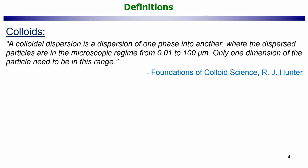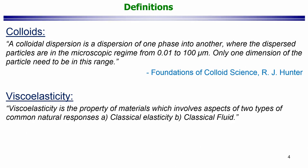This term called colloids we will also encounter in due course. But a term that is going to be very important for us and we are going to use quite a bit at the very onset is viscoelasticity. Viscoelasticity is defined as the property of materials which involves aspects of two types of common natural responses: classical elasticity and classical fluid. This definition, which is taken from the book Mechanical Response of Polymers by Wyman and Rajagopal, initially does seem like it is also appealing to your intuition in that it is asking you to think of a classical elasticity and classical fluid, and then the viscoelastic response is somewhere in between.